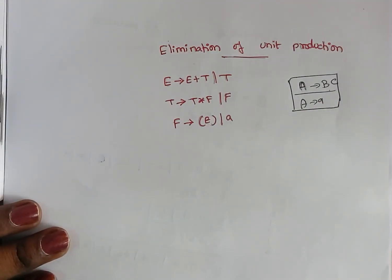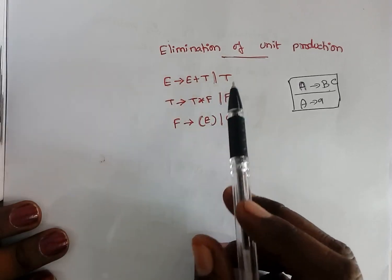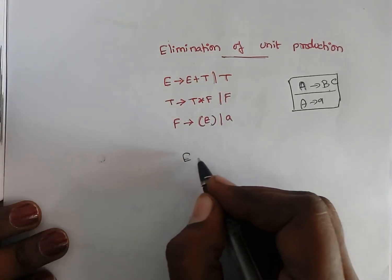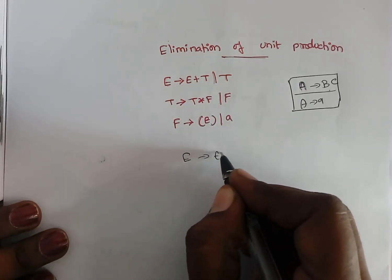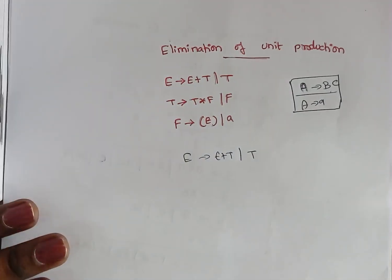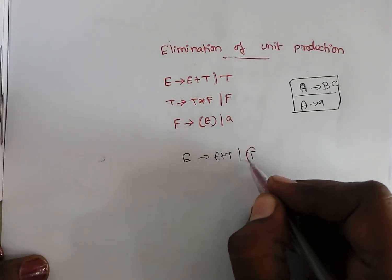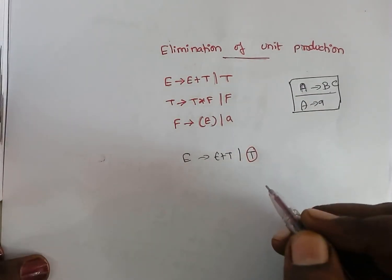So there are times we need to eliminate unit productions, and elimination of unit production is very simple — it is a mere substitution. For example, consider this grammar. Here we have a production e tends to e plus t, or e tends to t. In this case, e tends to t is a unit production.